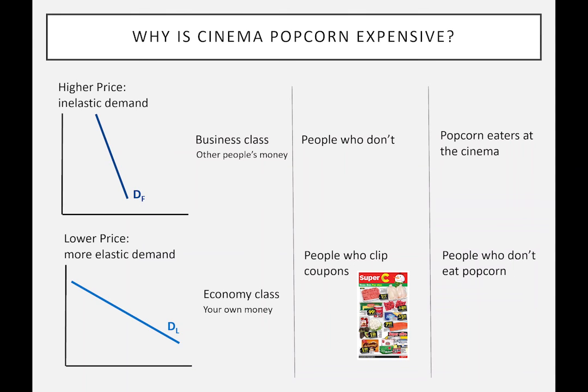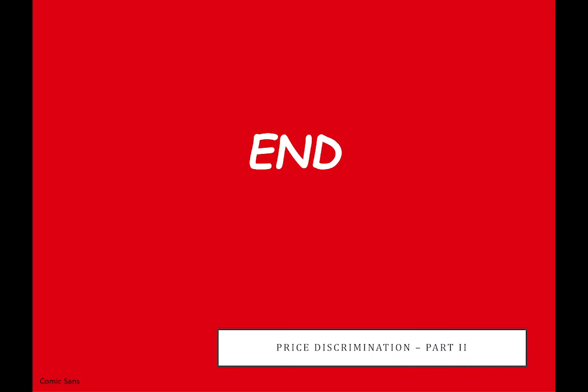Then there's the cinema example. Going to the cinema in the evening costs a ticket plus a bag of popcorn — say $10 plus $10, so $20 total. People who don't eat popcorn only pay $10 for the ticket. The F group happens to be the people who eat popcorn and have a more inelastic demand for cinema, while the L group are those who don't eat popcorn. This grouping occurs by chance — it could easily be the other way around.